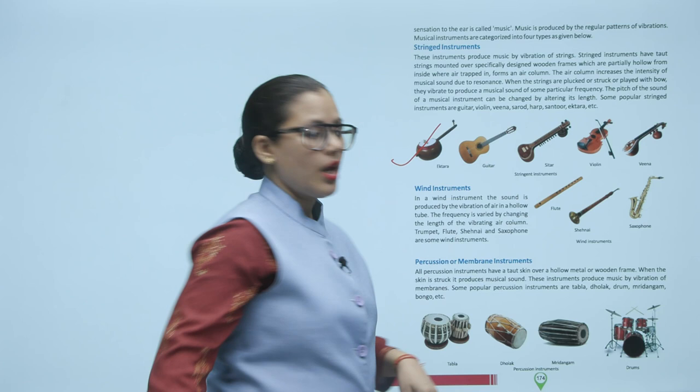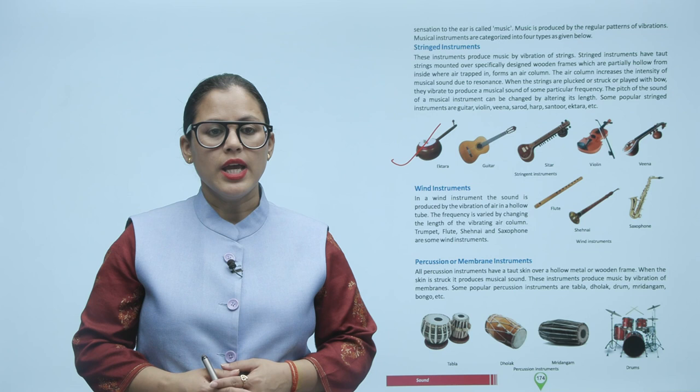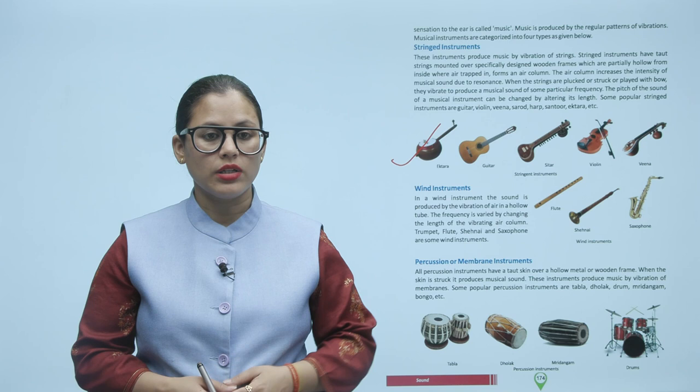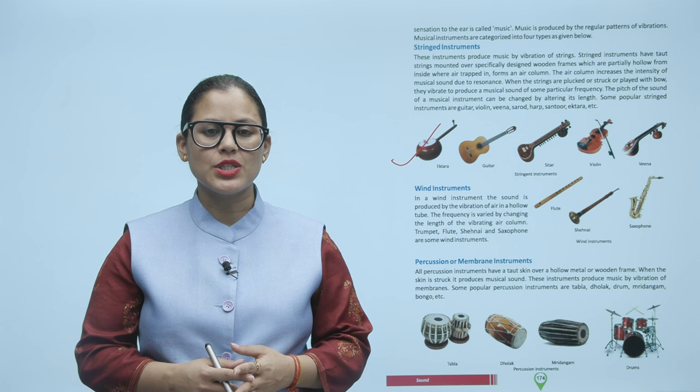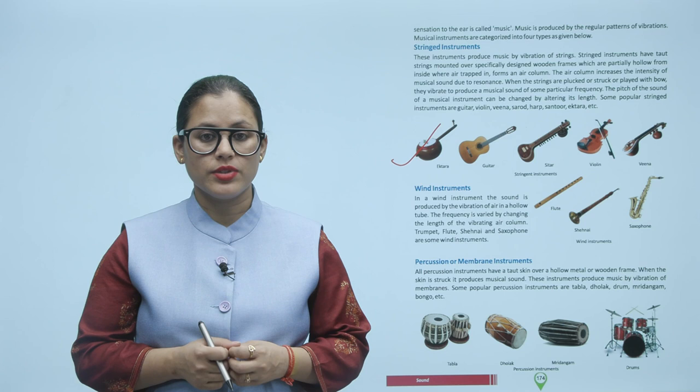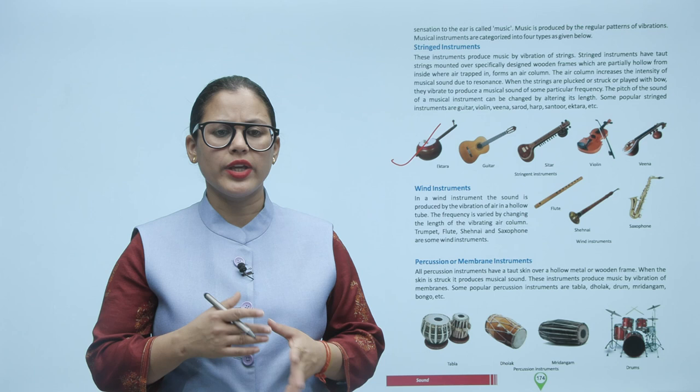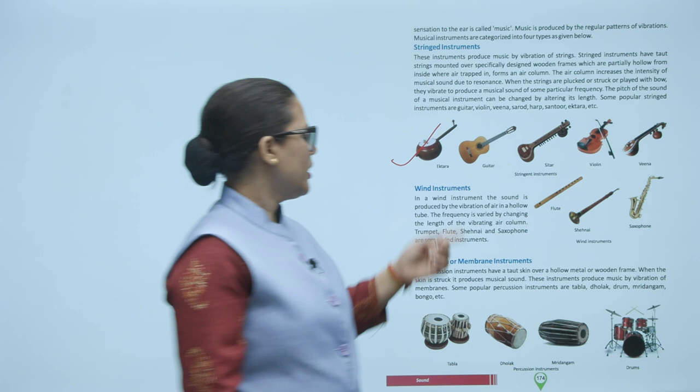Wind instruments: in a wind instrument, sound is produced by the vibration of air in a hollow tube. The frequency is varied by changing the length of the vibrating air column. Trumpet, flute, shehnai, and saxophone are some wind instruments.